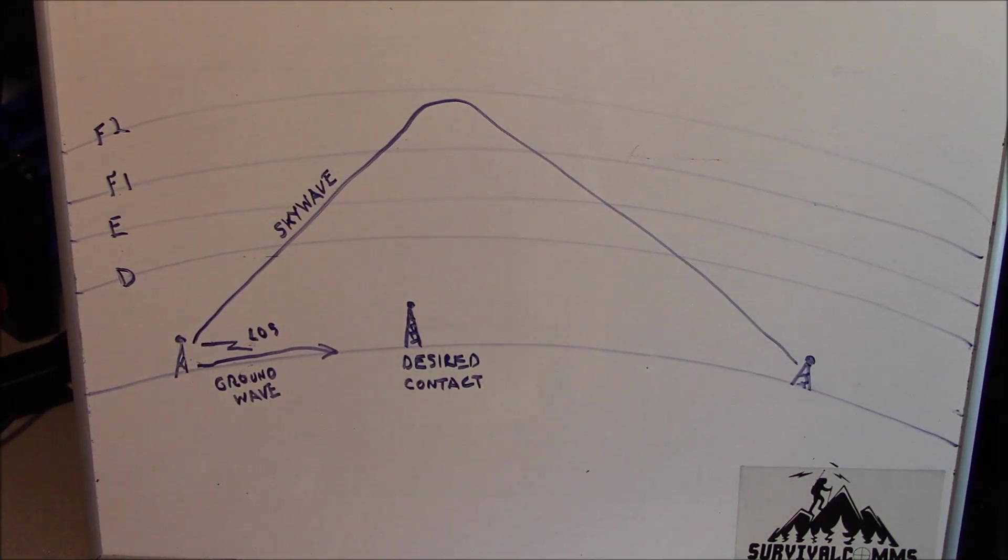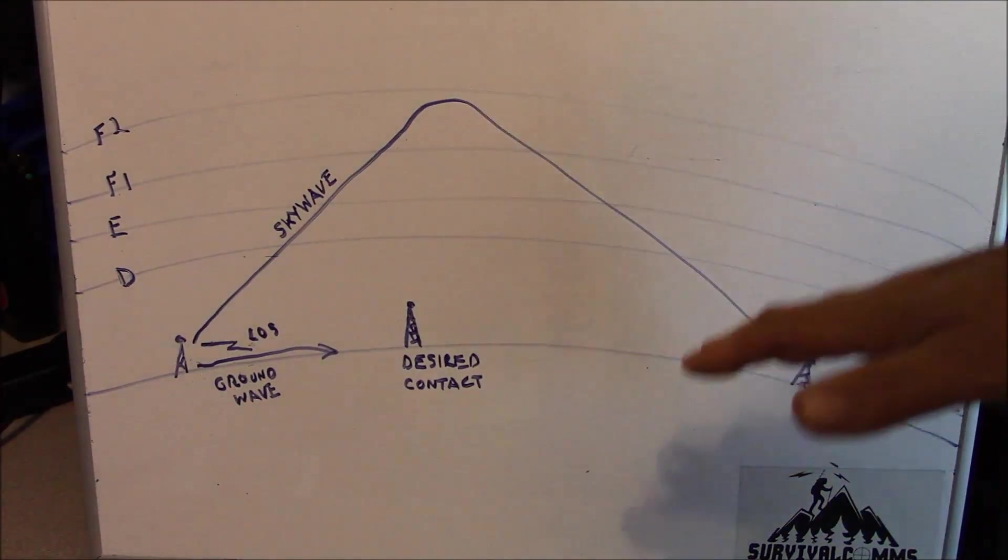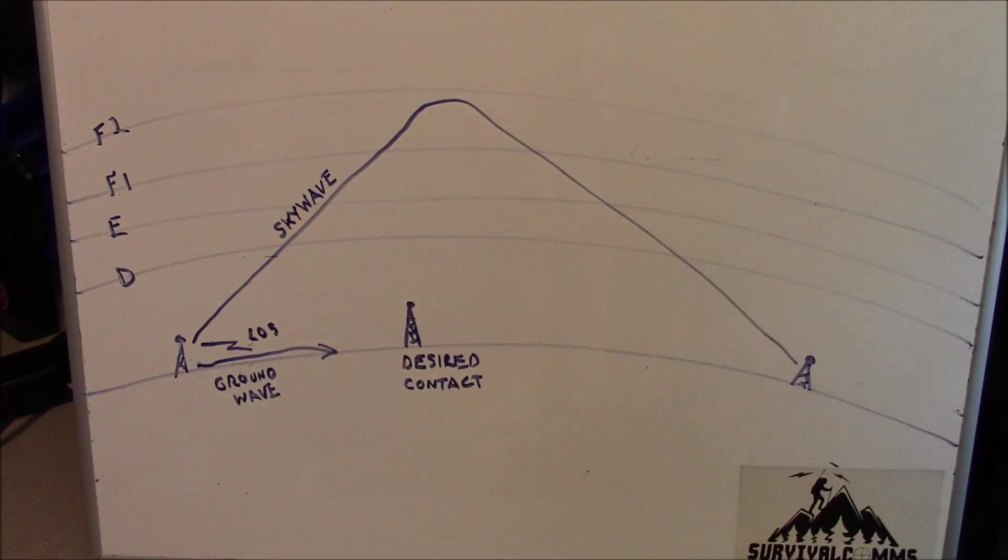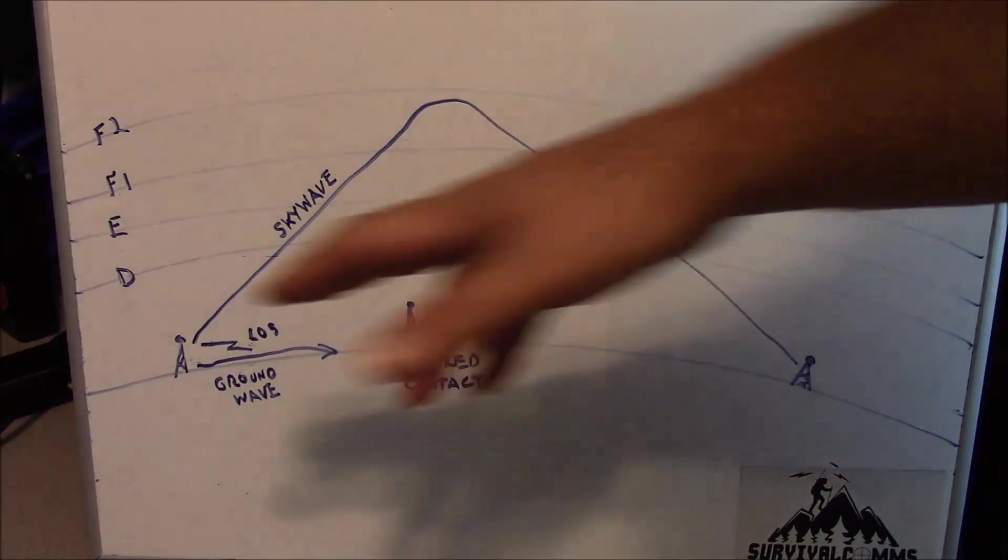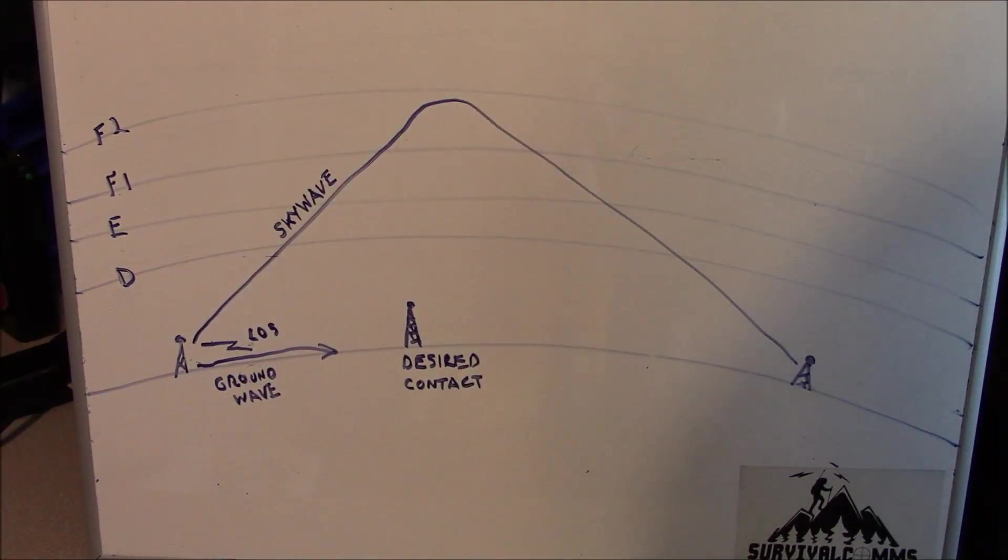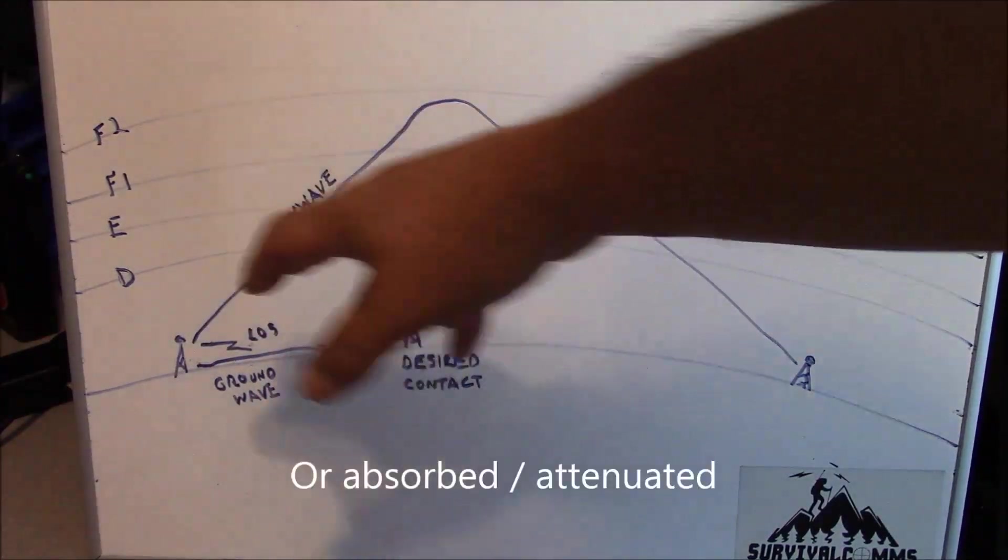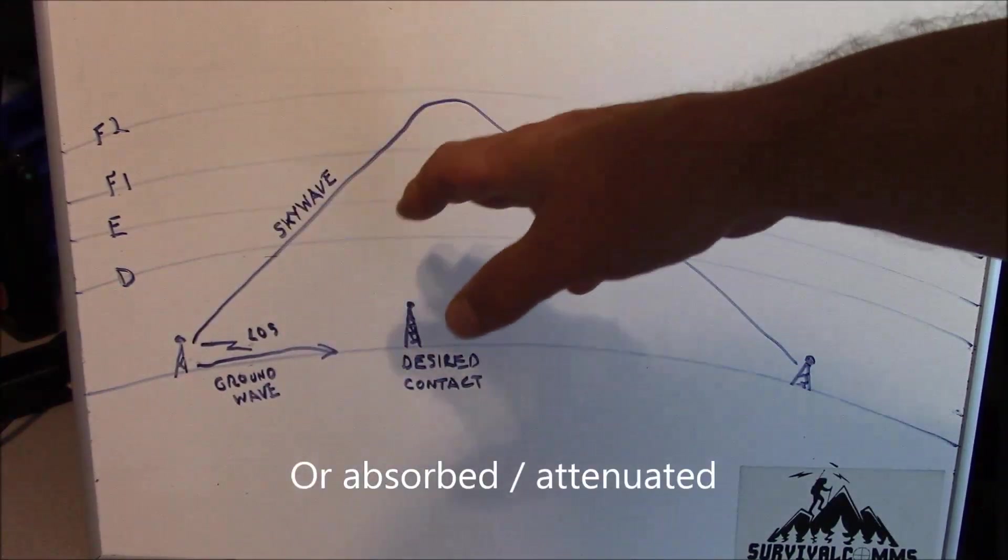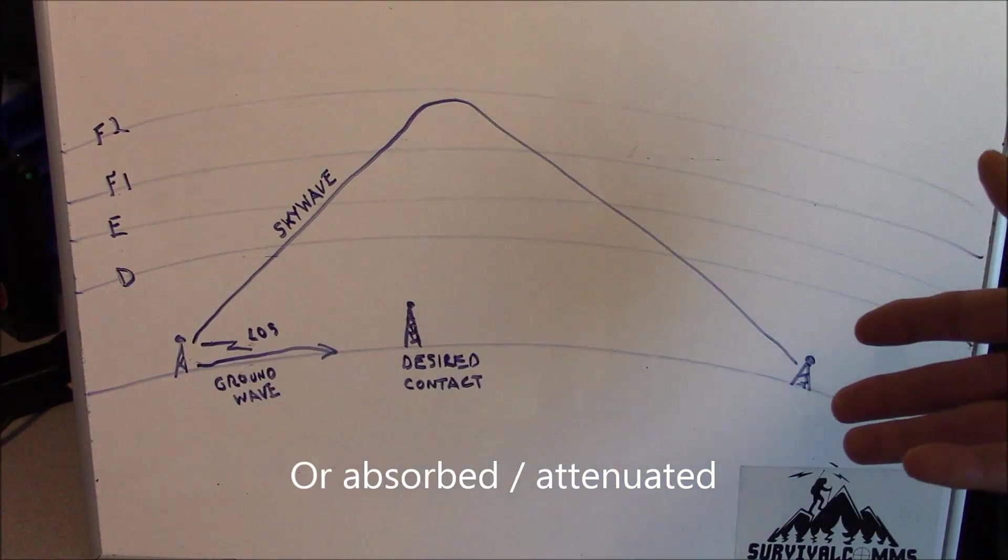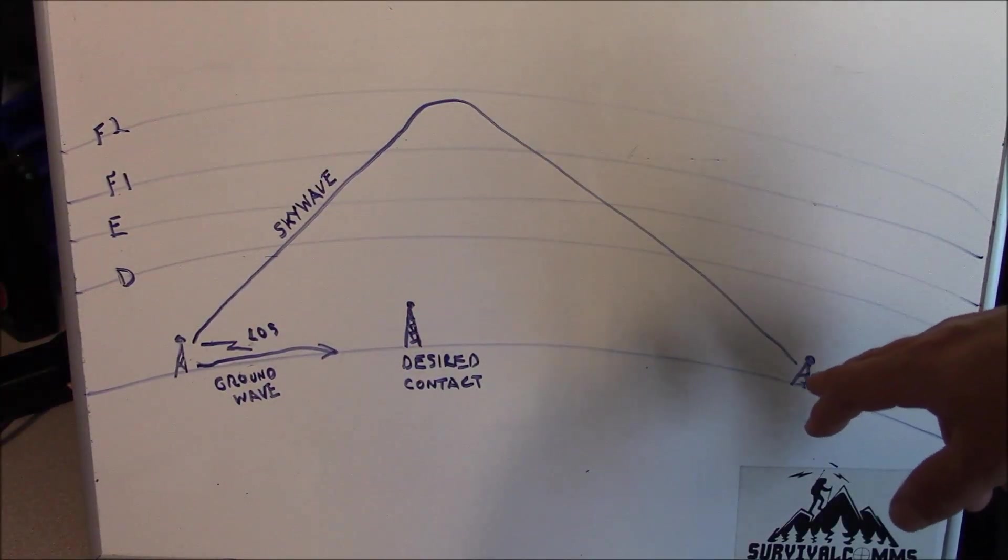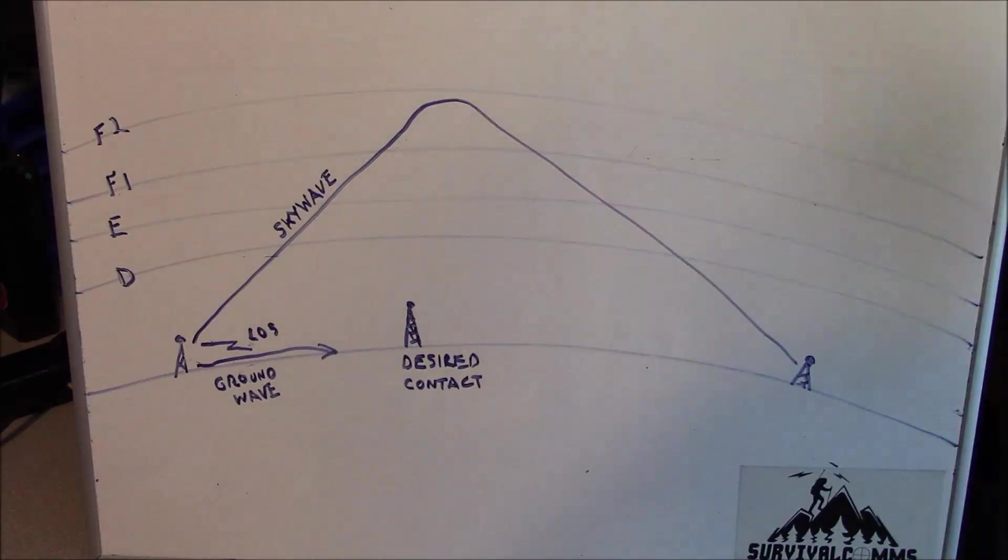This is a gross oversimplification of HF radio propagation for the purposes of the video. The Earth itself at ground level is here, and then this is what's called the ionosphere. The ionosphere is basically a bunch of free electrons, and these free electrons allow radio waves to propagate at HF radio frequencies. Typically, frequencies in the HF range below the maximum usable frequency are bent back to Earth by the ionosphere once they hit the ionosphere, and then they return to Earth.